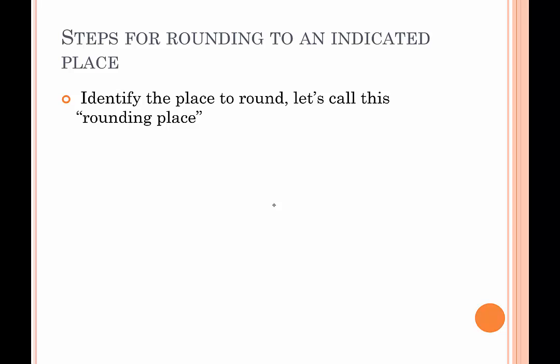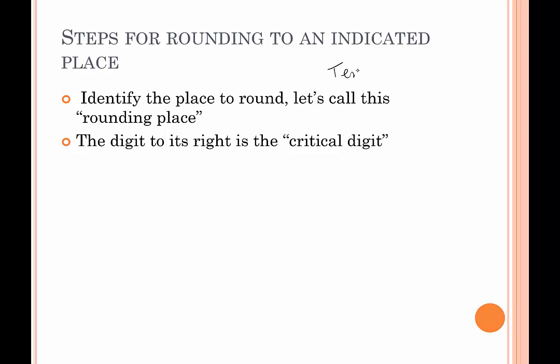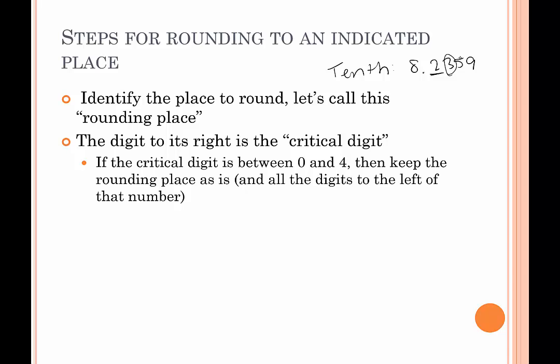So what are the steps for rounding to an indicated place? First, identify the place to round to — we'll call this the rounding place. The digit to its right is called the critical digit. For example, if we're rounding to the nearest tenth and we have the number 8.2359, the tenth is the rounding place and the 3 is the critical digit. If the critical digit is between 0 and 4 — which 3 happens to be — then we keep the rounding place as is. So 8.2359 is closer to 8.2 than it is to 8.3, and it would round to 8.2.